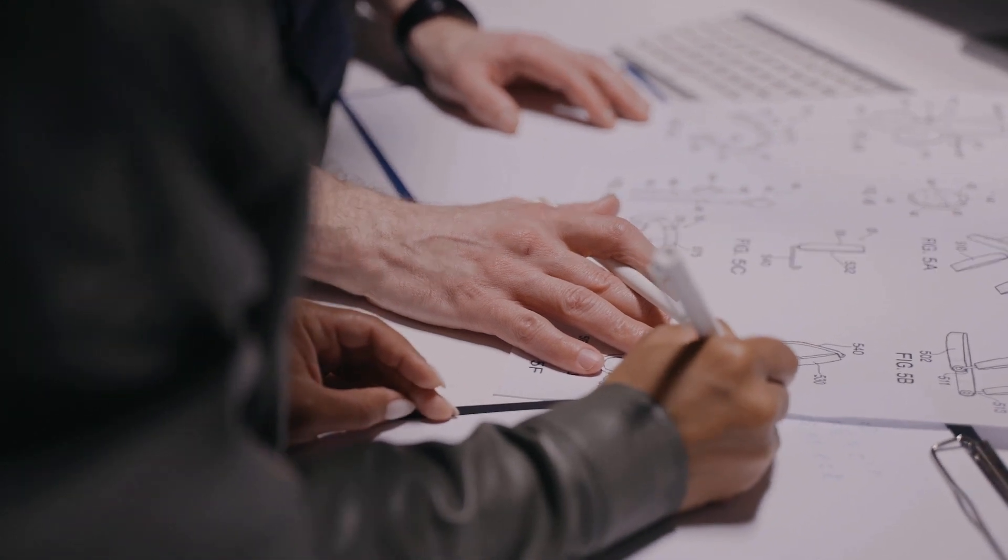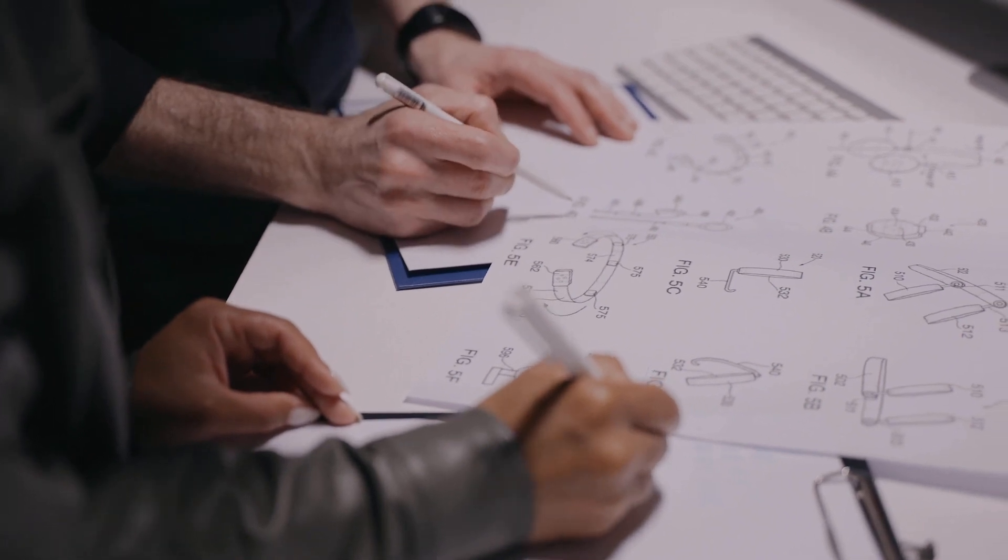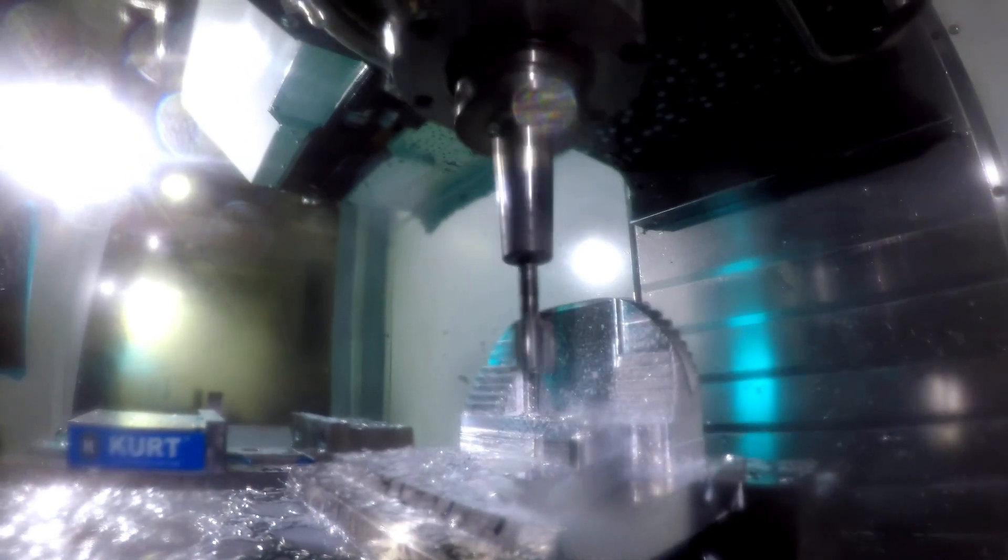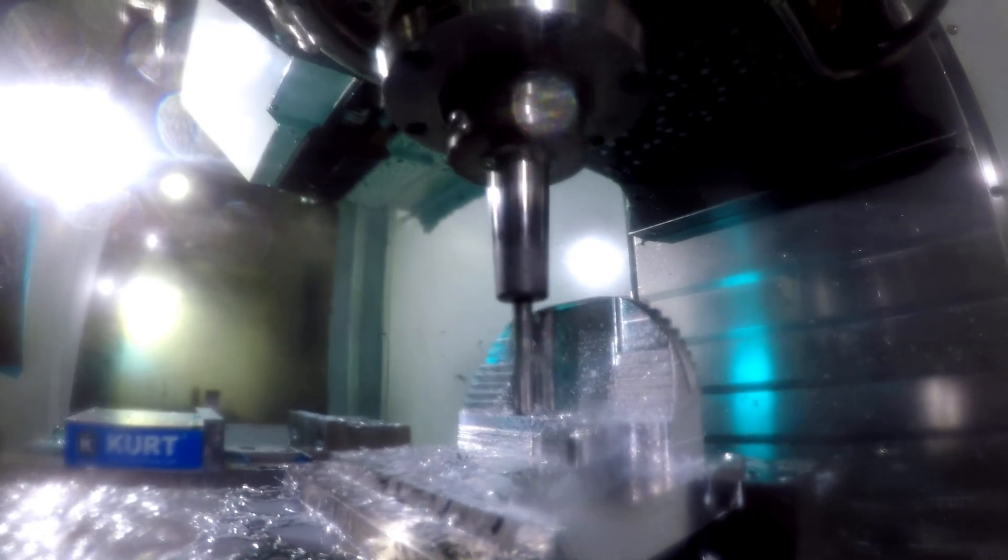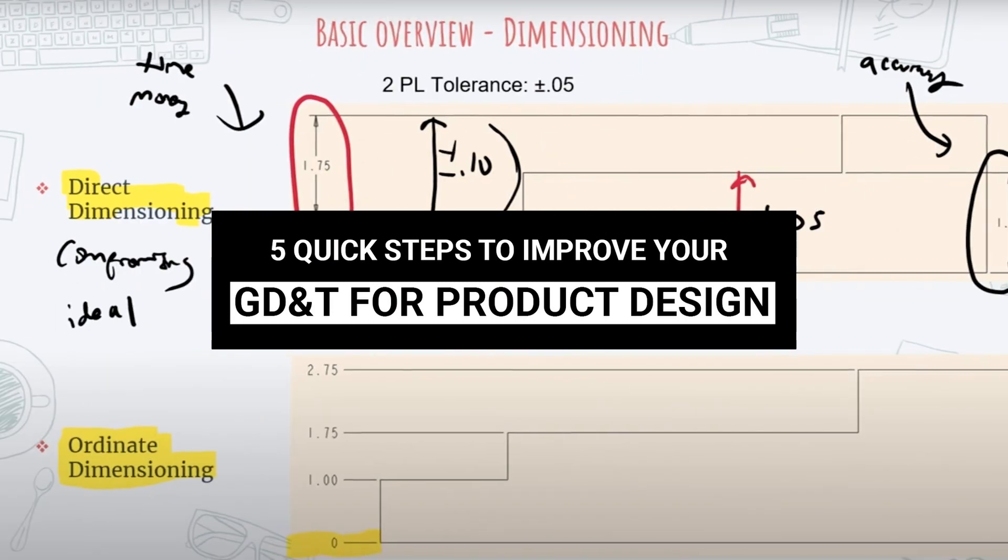Have your product development goals ever been hampered because the dimensions and tolerances were not effectively communicated on your 2D drawings? If so, you can avoid wasting time and effort and get your parts ready for manufacturing fast by using these five quick steps to improve your GD&T for product design.